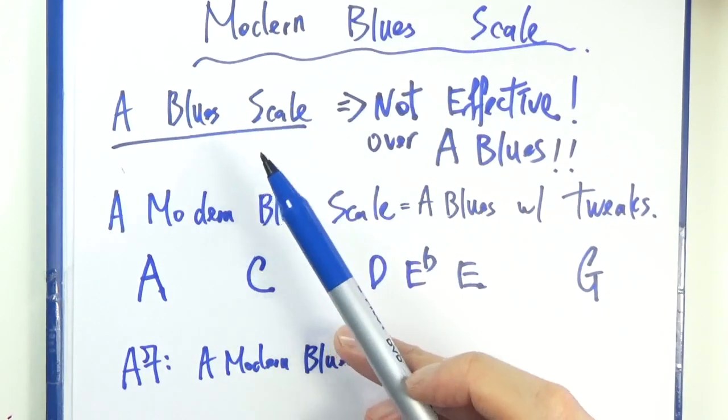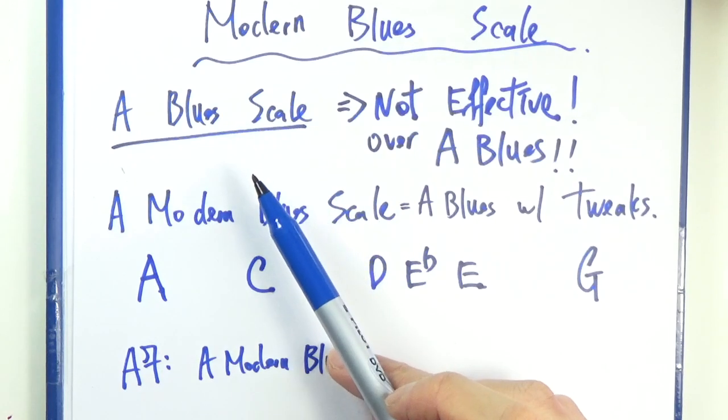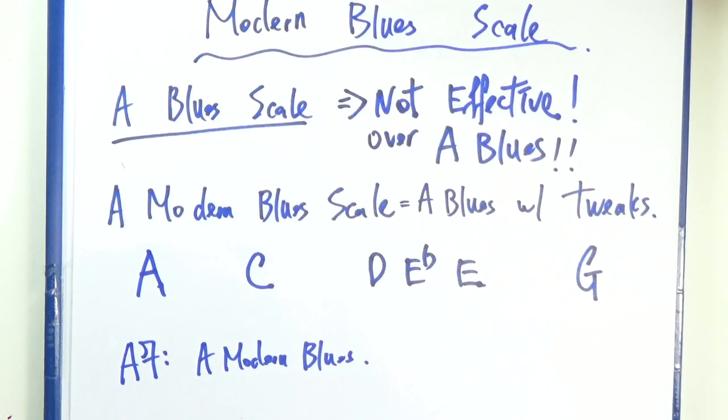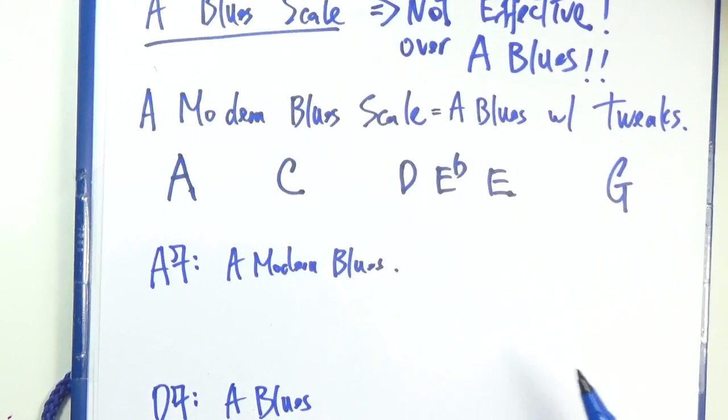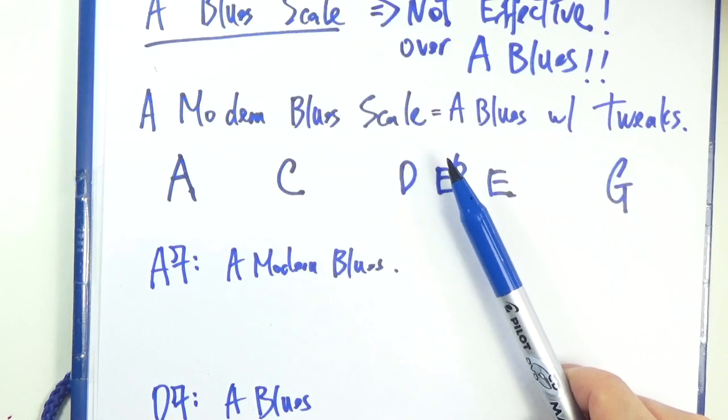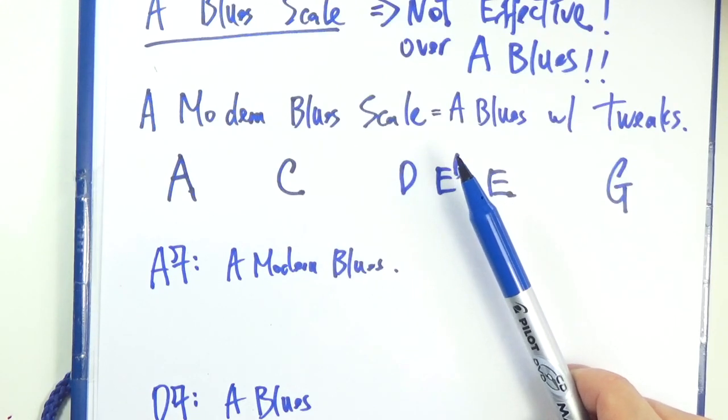So ironically the A blues scale is actually very limited and kind of misleading. You would do okay if you just scale over the A blues but there are a lot of limitations. Certain sounds that simply won't yield because it lacks certain scale tones that we need. So let's take a look. The modern blues scale is really just the A blues with some tweaks and some additions.